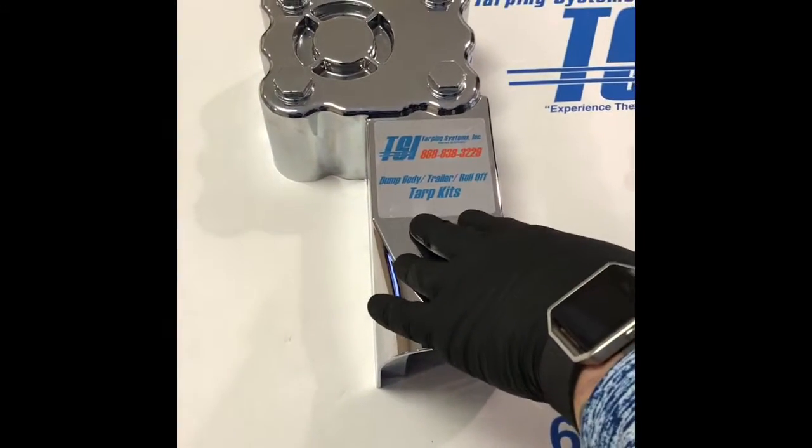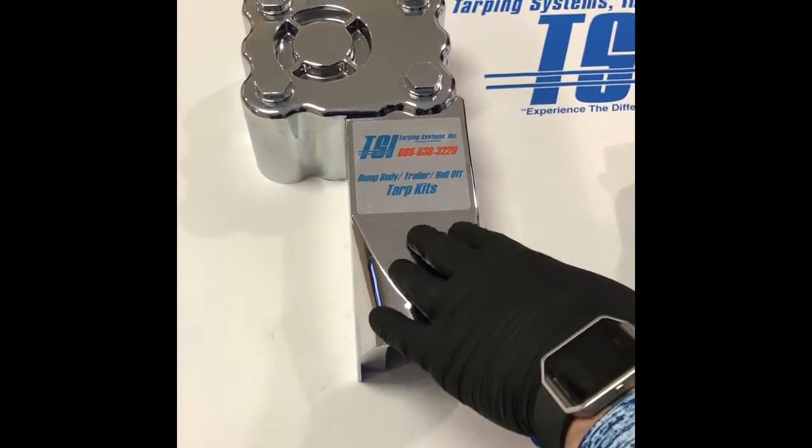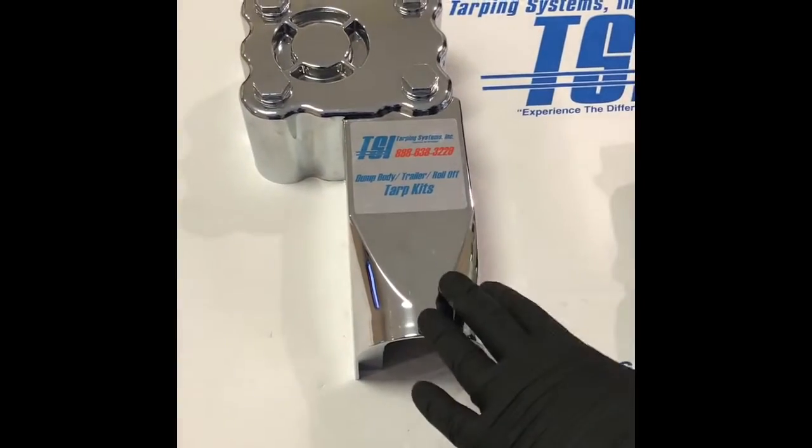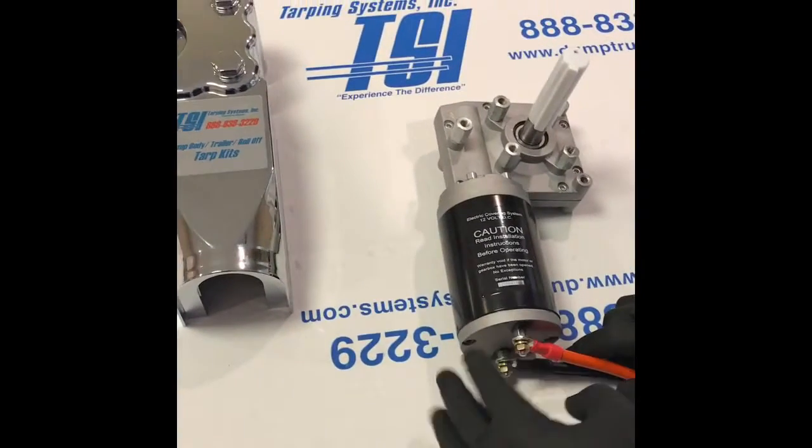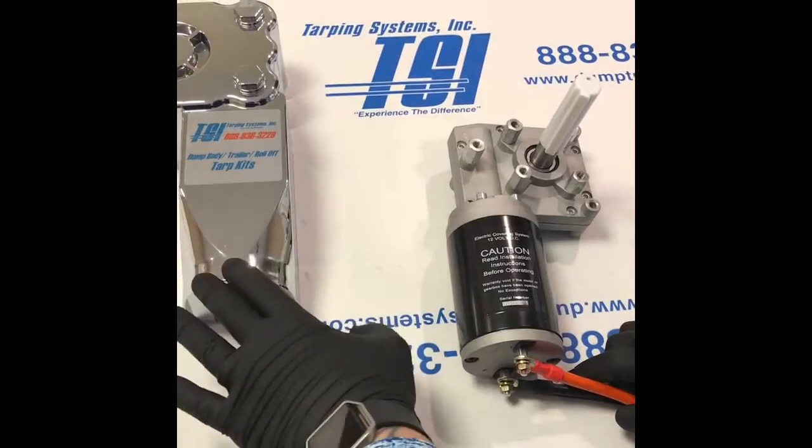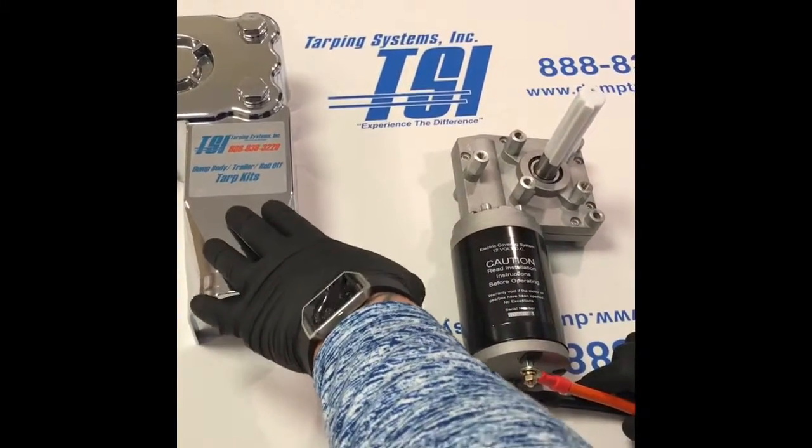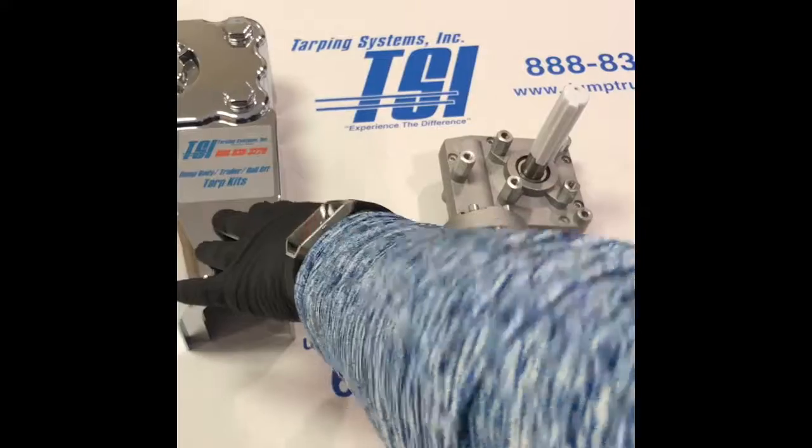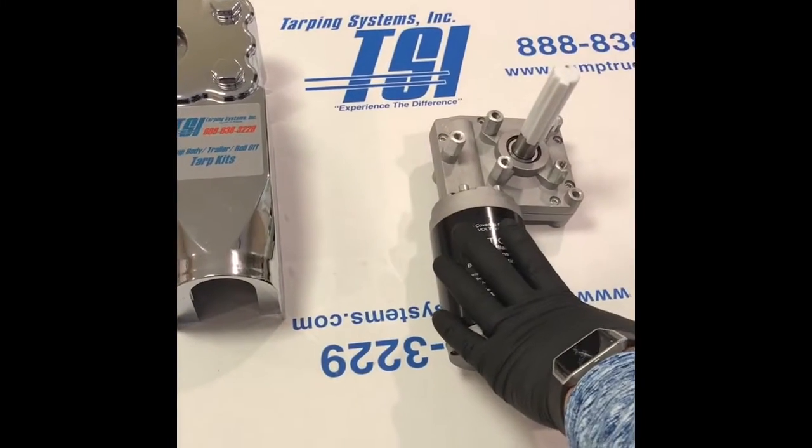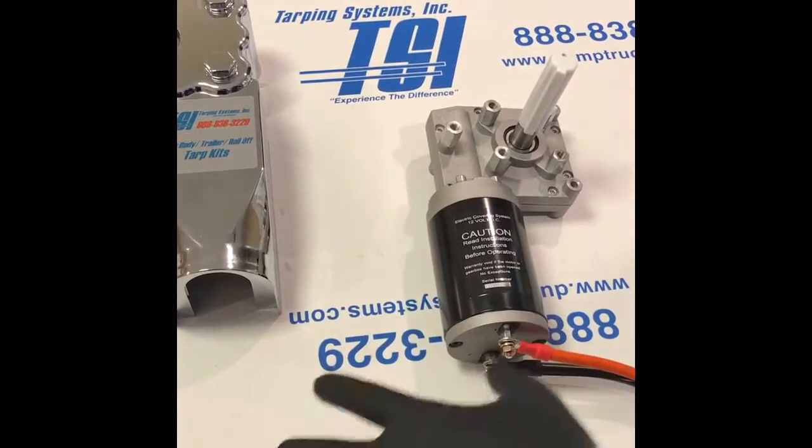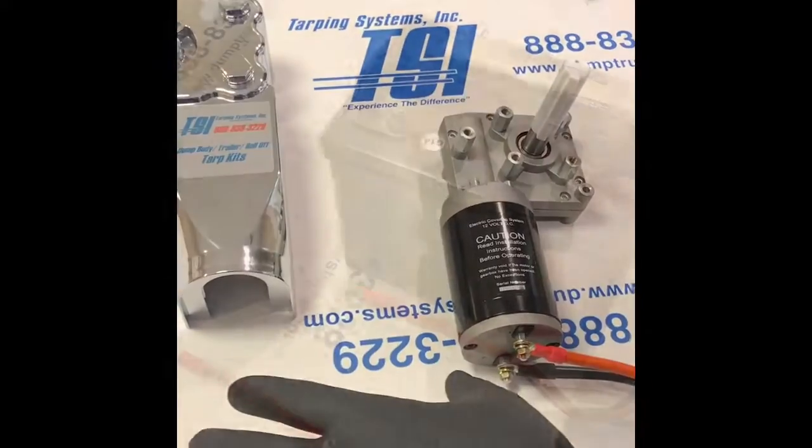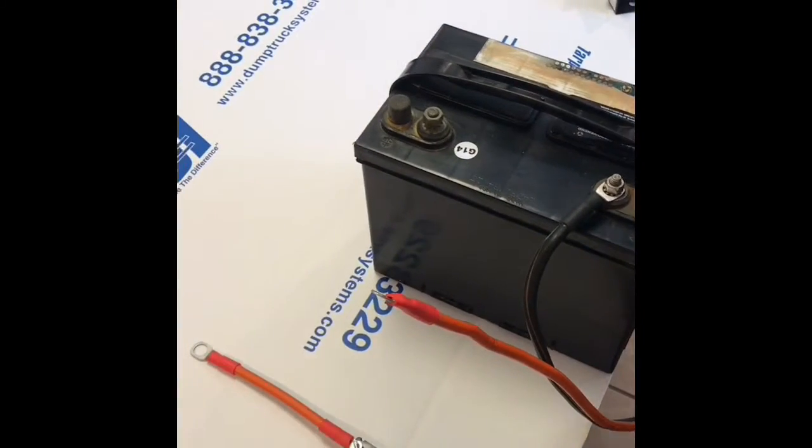Another thing that's really important is this chrome plated cover will actually conduct electricity. So we want to make sure our terminals and our posts do not touch anywhere on this cover because it will short out. Now that we're finished with this part of the motor, we can go back over to our battery box.